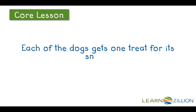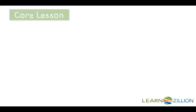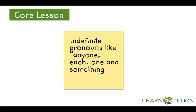'Each of the dogs gets one treat for its snack.' Here the antecedent is the phrase 'each of the dogs.' Although the word 'dogs' is plural, the indefinite pronoun 'each' is singular, so our antecedent is actually singular and requires a singular pronoun. 'It' fits here as a pronoun because we don't know the gender. Indefinite pronouns like 'anyone,' 'each,' 'one,' and 'something' are all singular words and require singular antecedent-pronoun agreement.